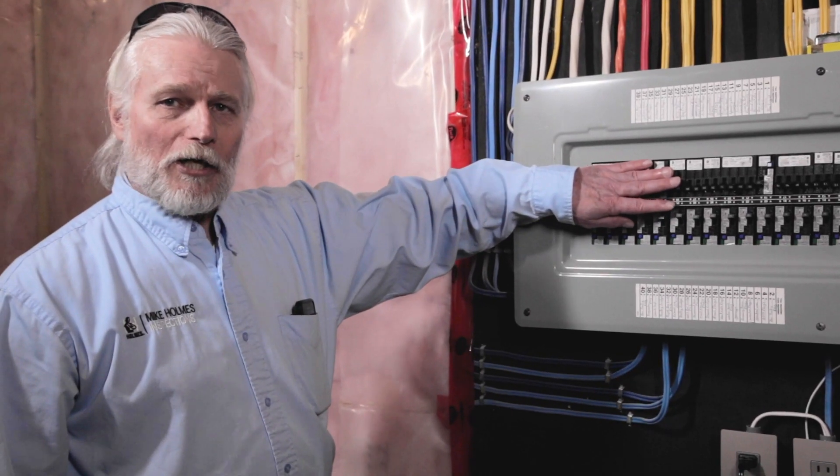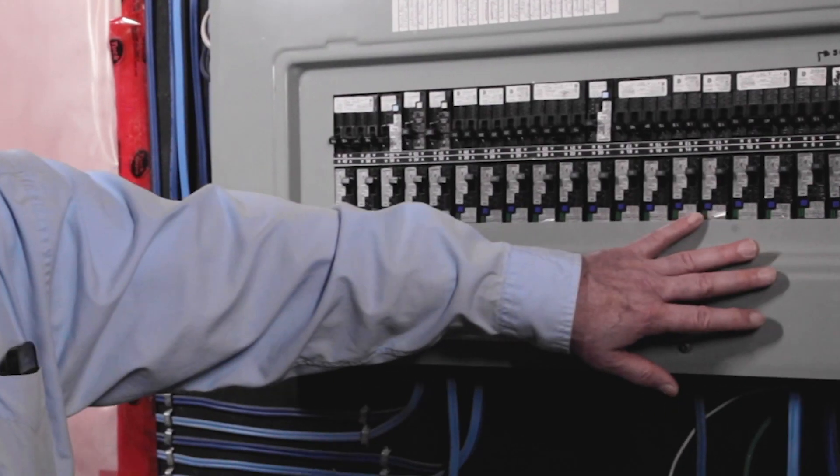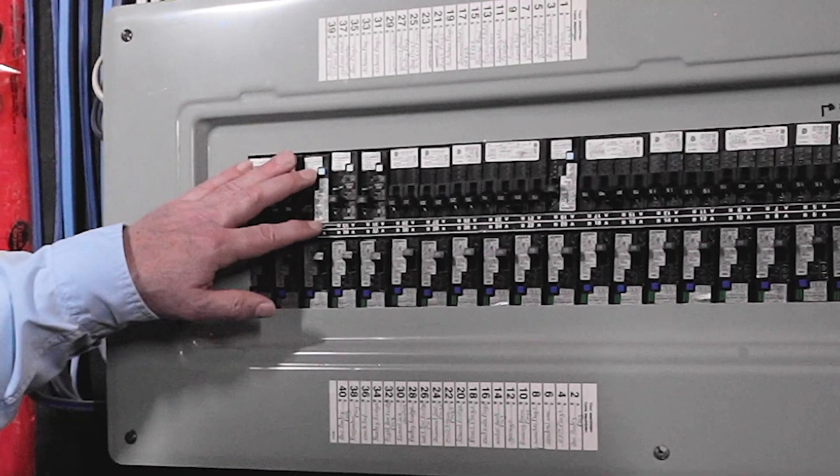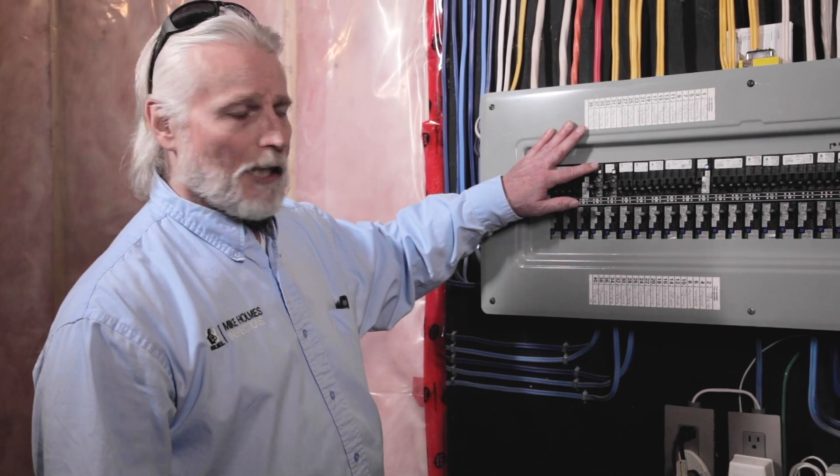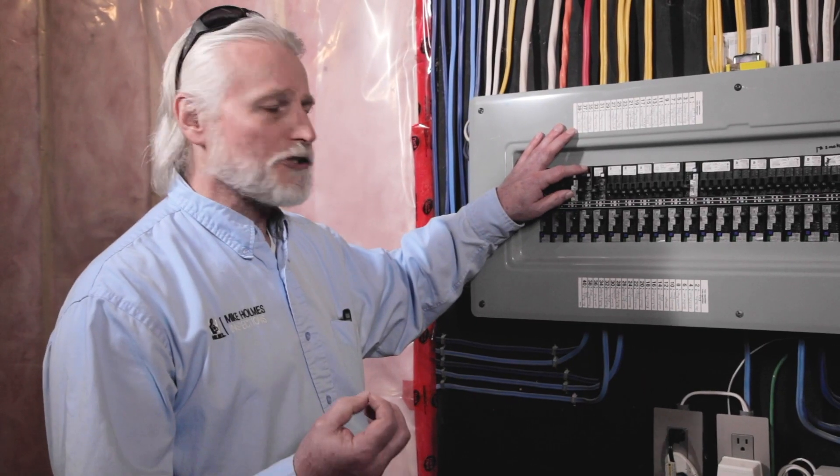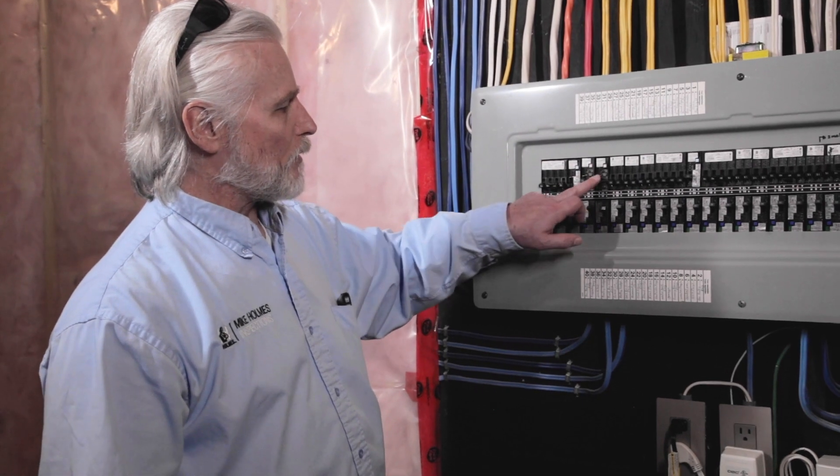One thing on these breakers that you are going to see are little buttons. These are test buttons to show that they're a specialized breaker. These ones particularly are ground fault circuit interrupters which if there's any type of surge or anything in that circuit, these breakers are going to trip.